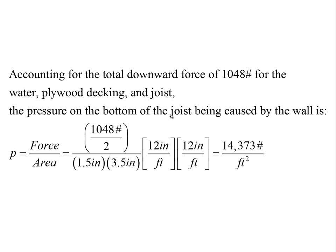Accounting for the total downward force of 1048 pounds from the water equivalent, plywood decking, and joist, the two walls together must push up with 1048 pounds total. Taking one wall, it pushes up with half: 524 pounds. This force is distributed over the bearing area — joist width times wall thickness: 1.5 in × 3.5 in, with conversion factors [1 ft / 12 in] twice to cancel inches. The result is 14,373 pounds per square foot bearing pressure at the wall-joist interface.